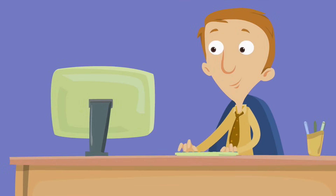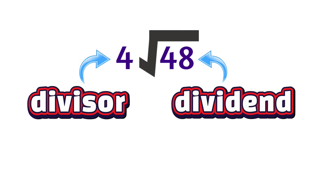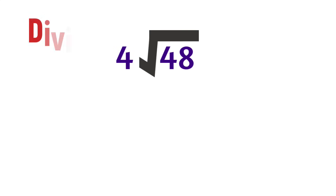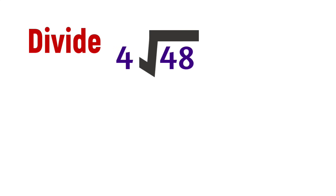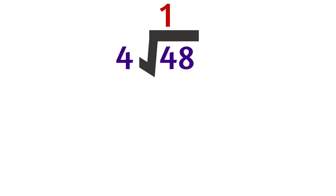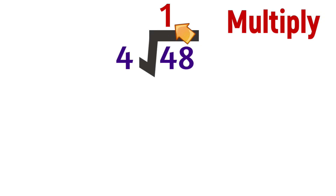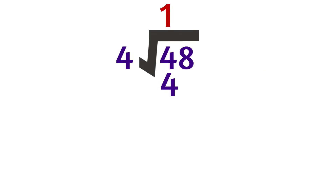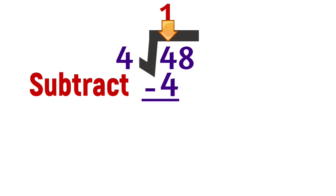Let's set up 48 divided by four again. We start with the long division bracket, put the dividend — which is 48 — inside the bracket, then put the divisor — which is four — right in front. We're going to start with the first digit inside the bracket, the four in 48. How many times does four go into four? One time. So we write a number one on top of the bracket right above this four. Next, we multiply this number one times the divisor. One times four equals four, so we put that four right here underneath the four in 48. Then we subtract: four minus four equals zero.